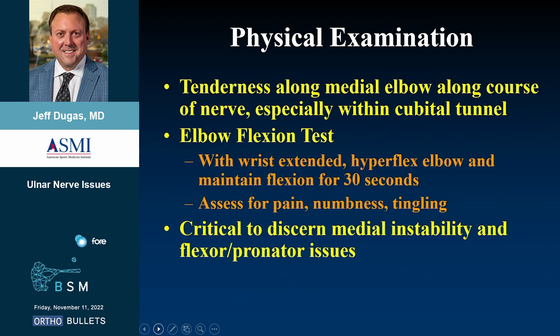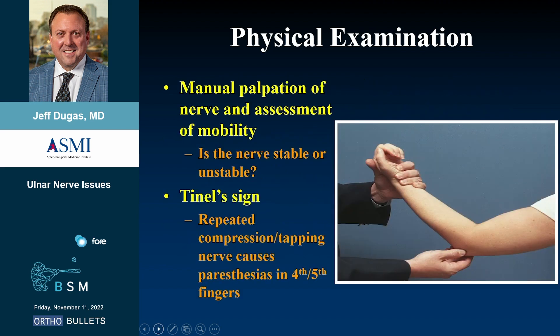Tenderness along the medial elbow along the course of the nerve, especially within the cubital tunnel, is pathognomonic. We do an elbow flexion test — either flex the elbow up for a prolonged period or apply pressure. It is critical to discern medial instability in the presence of this, because you wouldn't want to address only the nerve in the presence of an unstable elbow. We manually palpate the nerve for stability and perform the Tinel sign.